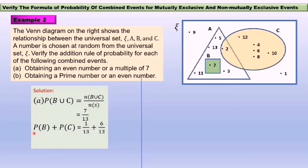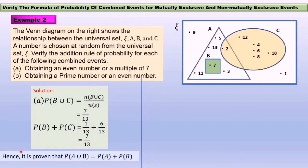Using the formula: probability of event B plus probability of event C. Probability of event B has 1 element, so 1 over 13. Probability of event C has 6 elements, so 6 over 13. Therefore, 1 over 13 plus 6 over 13 equals 7 over 13. Hence it is proven that probability of event B union C equals probability of event B plus probability of event C.